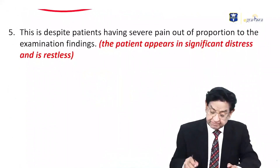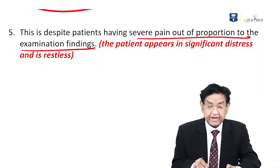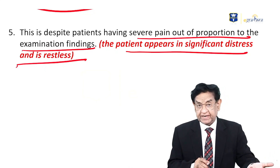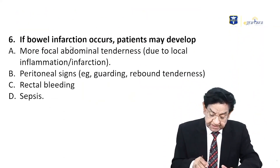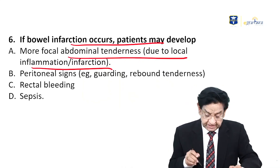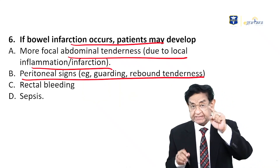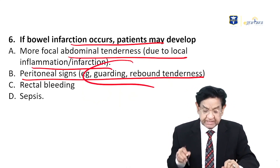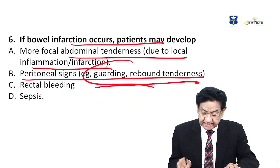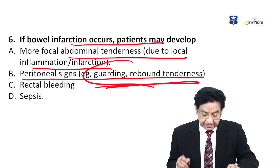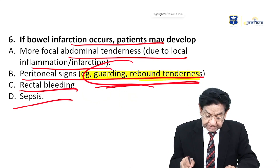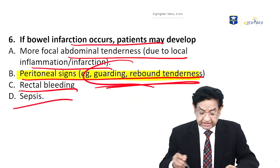In this case the patient has pain out of proportion to examination findings. The patient appears in significant distress and is restless, but examination finding is minimal. When infarction develops, focal abdominal tenderness occurs due to localized inflammation, then tenderness increases, and peritoneal signs — guarding and rebound tenderness — appear. Rectal bleeding and sepsis occur in advanced stages. These signs are seen only when infarction occurs, not in the ischemic stage.